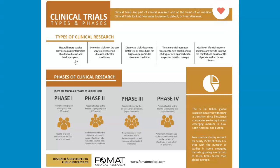Screening trials test the best way to detect certain diseases or health conditions in a healthy population, sometimes actively and sometimes passively — that's where active and passive surveillance comes into play. Once sickness does occur, diagnostic trials determine better tests or procedures for diagnosing a particular disease or condition. The key question is what are the cutoff points needed to improve sensitivity, specificity, and related measures — whenever you're thinking of diagnostic trials, start thinking about these numbers.